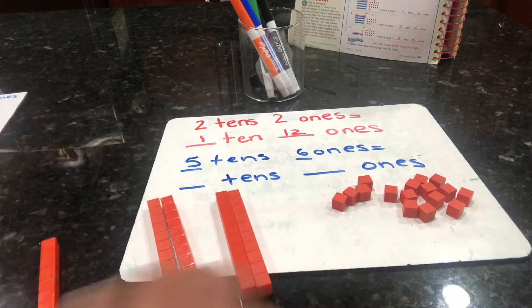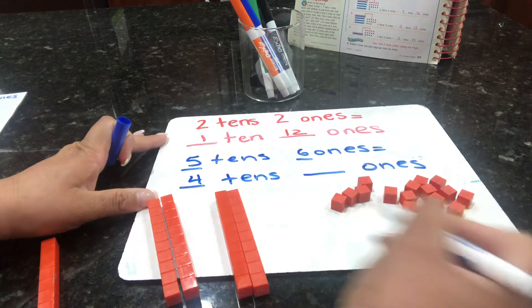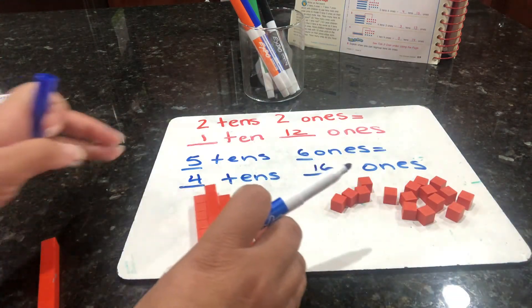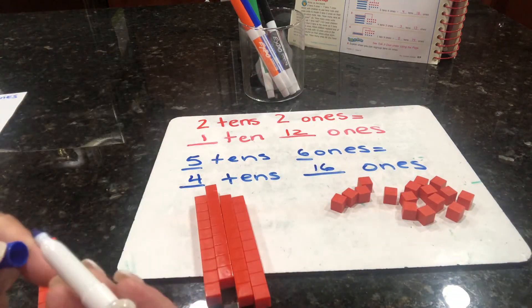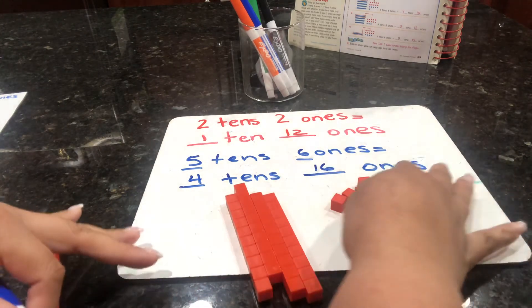Here we have four tens and sixteen ones. Therefore, five tens six ones is the same as four tens sixteen ones.